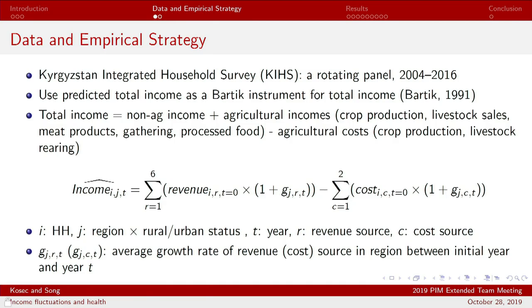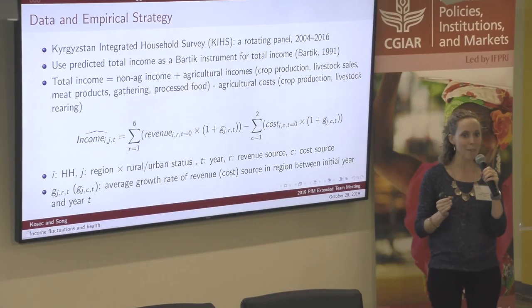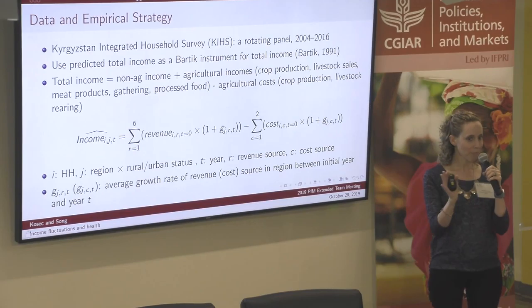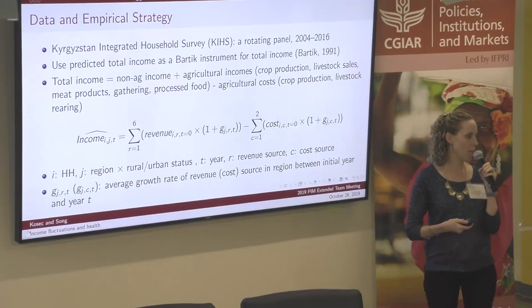We deal with identifying causal relationships between income and health by using a Bartik instrument for total income. We look at seven different sources of income: crop production, livestock sales, meat production, hunting and gathering, processed food, and also crop production costs and livestock rearing costs. We look at the share of an individual's income comprised of each source in their first year in the dataset, then look at region-wide changes in income from these sources over time — predicting people's income in each year based on past income composition. This is a fairly standard use of a Bartik instrument.